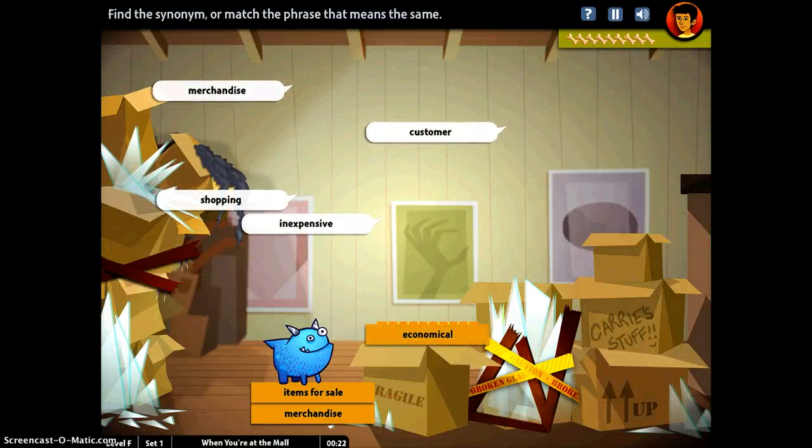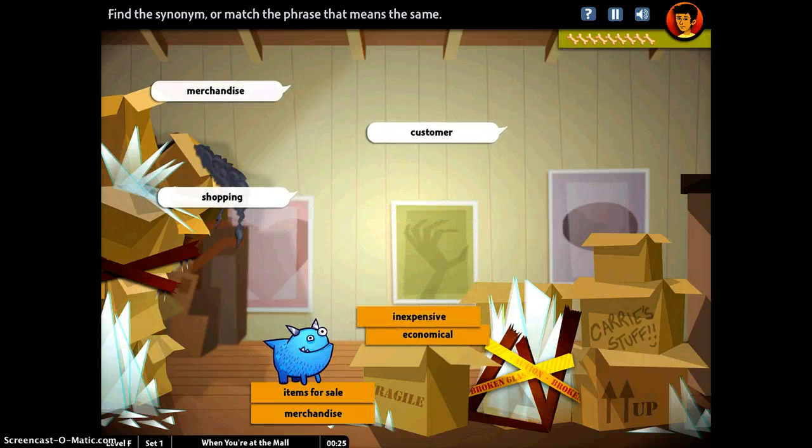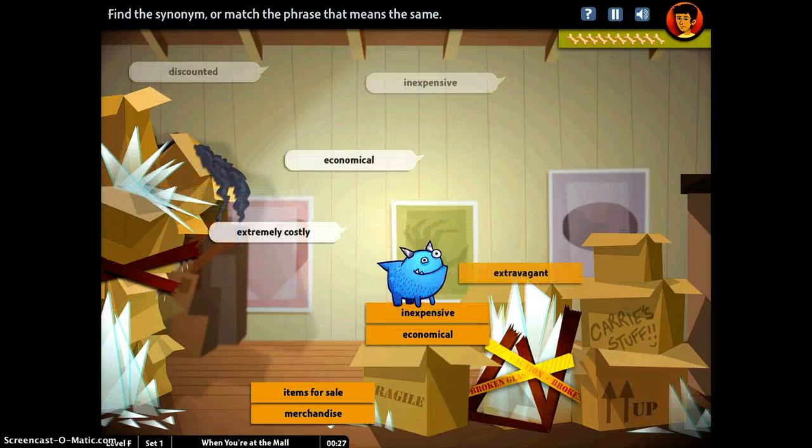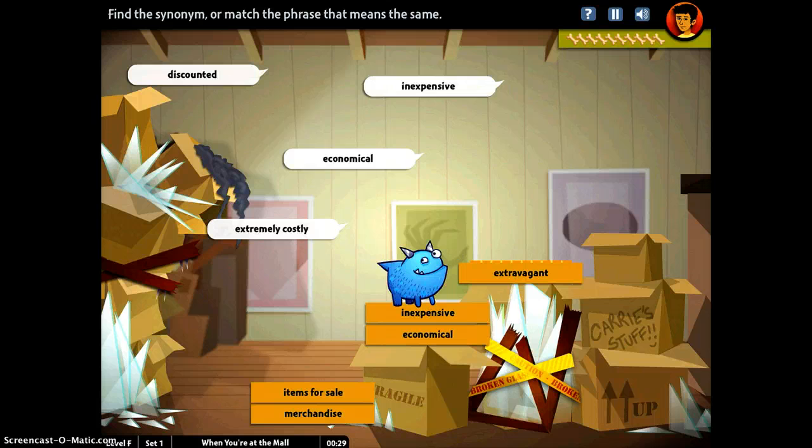Now it says go ahead and find the one for economical. I will tap it and drag it to the next level. I'll continue to do that.